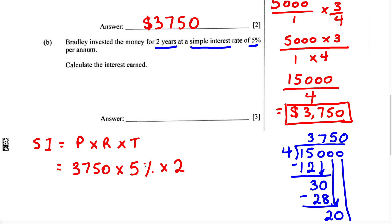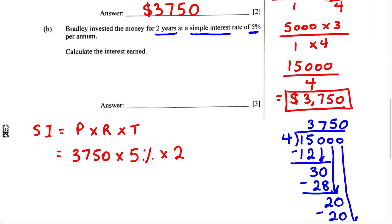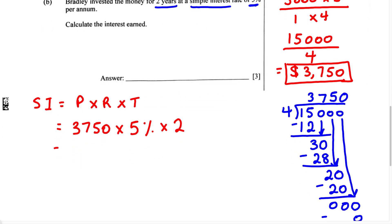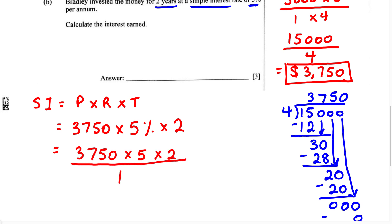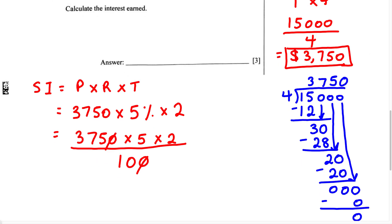The way I'm going to do it is change the percent into a fraction by writing it over 100. So we can write this as 3,750 multiplied by 5, multiplied by 2, all over 100. Now let's simplify. We can cancel a zero from 3,750 with a zero from 100, leaving us with 375 multiplied by 5, multiplied by 2, over 10.